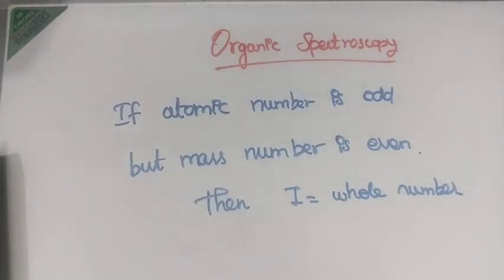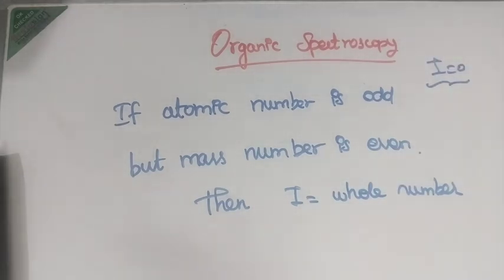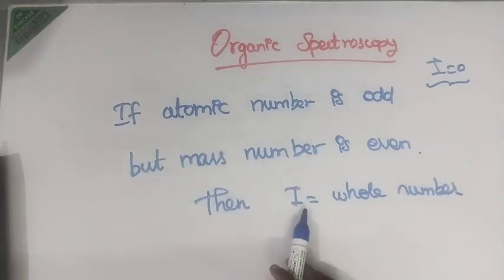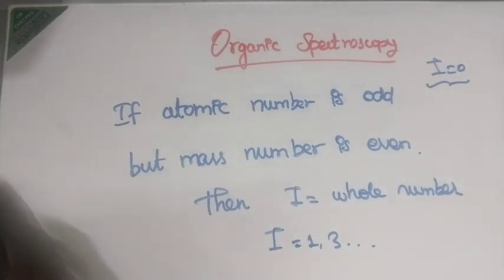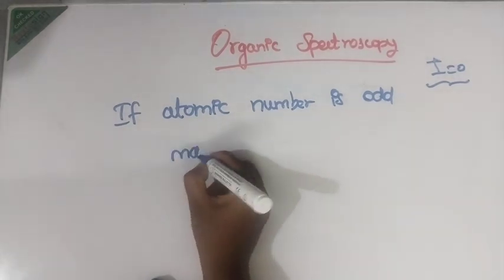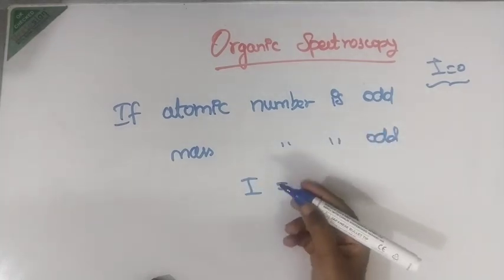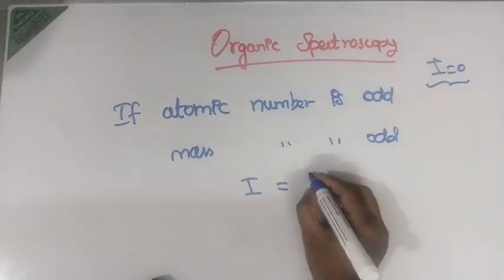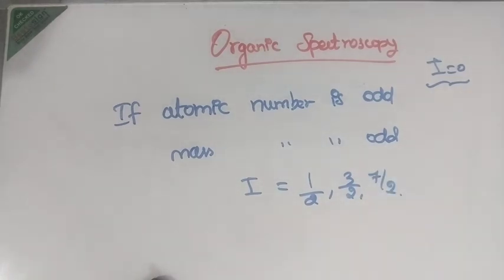If both the atomic and mass numbers are even, then the particular species will have I value equal to 0. If atomic number is odd but the mass number is even, then I value will be a whole number like 1, 3, etc. If atomic number is odd and mass number is also odd, then I value will be an integral value of half, like 1/2, 3/2, 7/2, and so on.